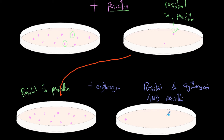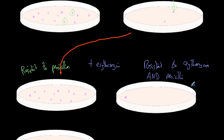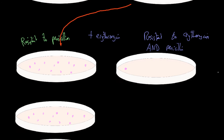And this is where we start to create massive problems. Because if we leave this overnight to incubate, this colony has been allowed to reproduce — because obviously there's no other bacteria taking up all the nutrients. It keeps reproducing. And now we have loads of bacteria which are resistant to both penicillin and erythromycin. This is a huge problem because now we've got loads of bacteria which are starting to resist loads of our antibiotics.